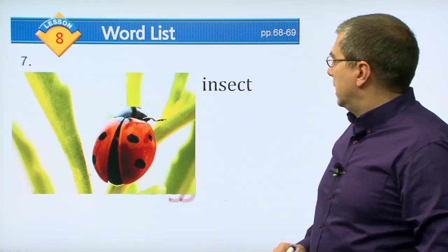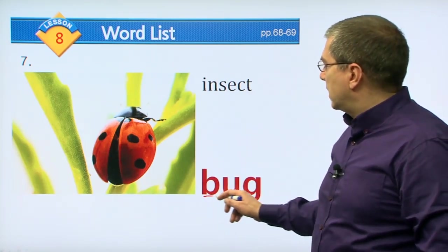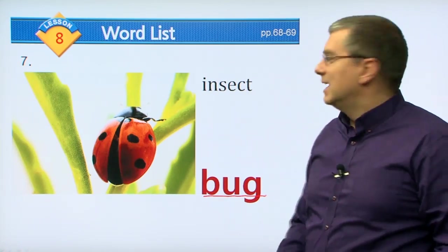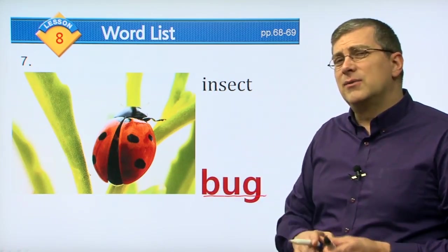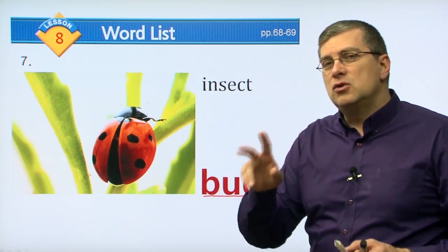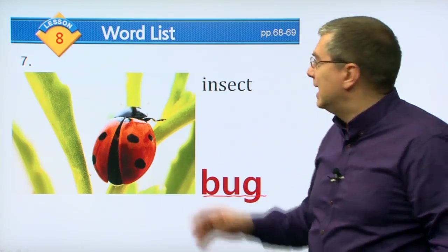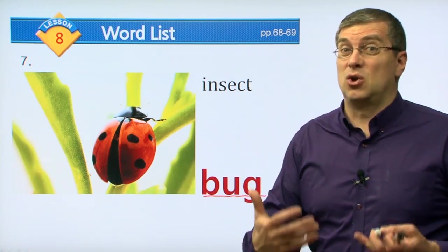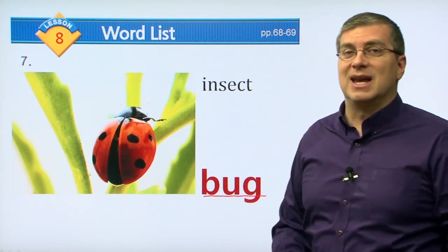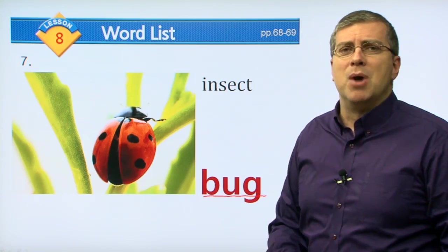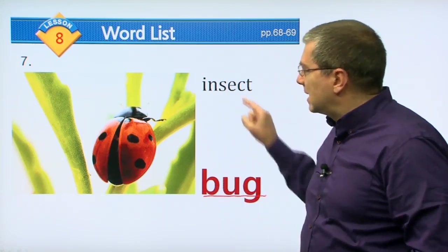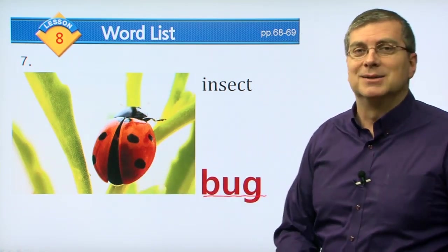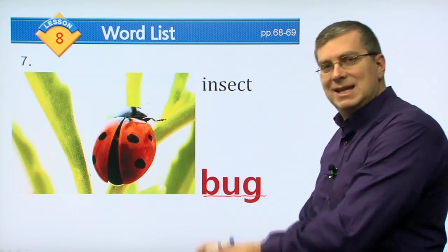Insect. We have an insect here. Another word for insect is bug - you may know this word from the movies. In English, there are a lot of words that mean the same thing. Insect is more formal - it's a little bit more difficult. It's much easier to say bug. Insects are bugs, and this is an example of a bug. You can say bug or you can say insect - same thing.